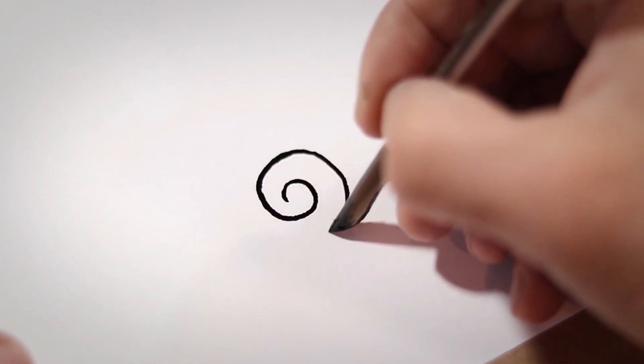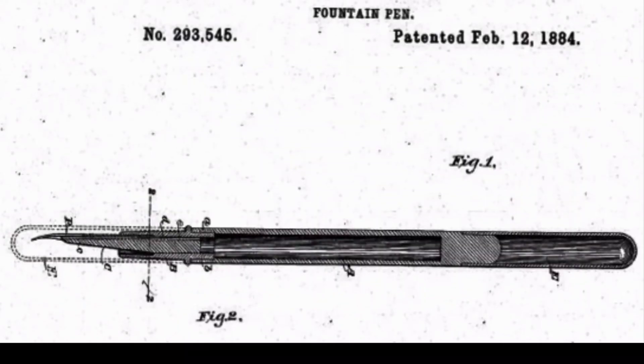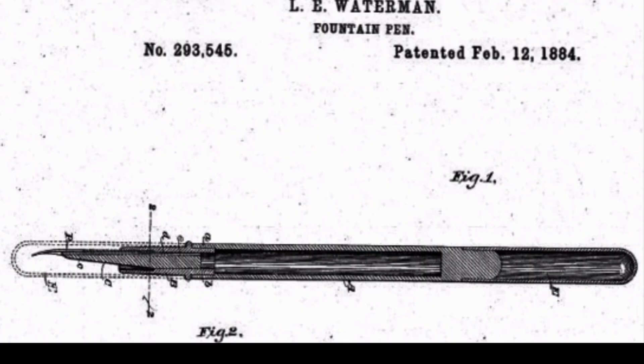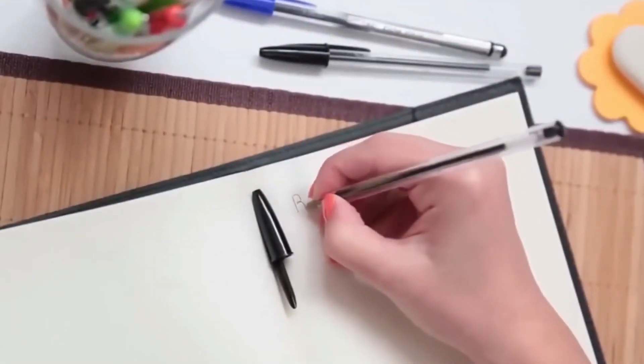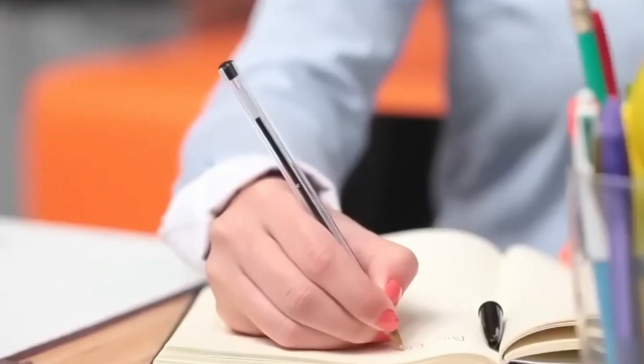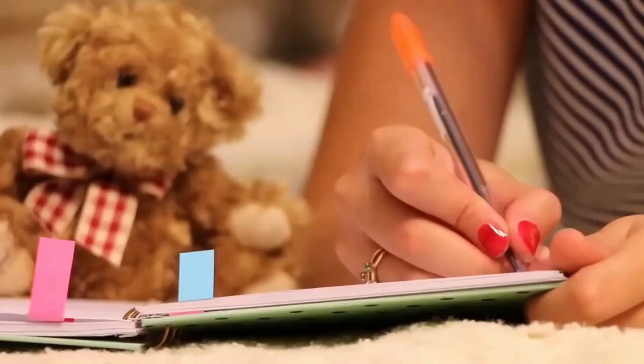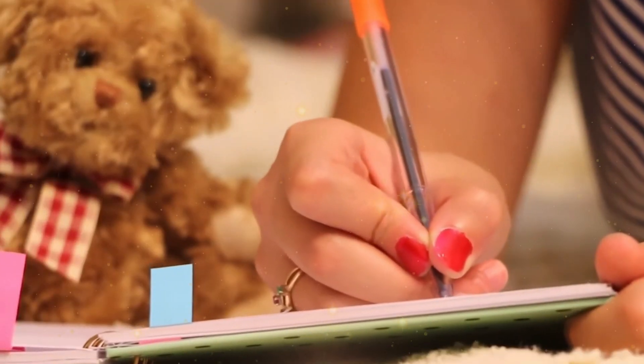As time zoomed ahead to the 19th century, people invented the ballpoint pen, which is a lot like the pens we use at school today. This pen had a tiny ball at its tip that rolls around as you write, picking up ink from inside the pen and letting it flow smoothly onto the paper without any mess.